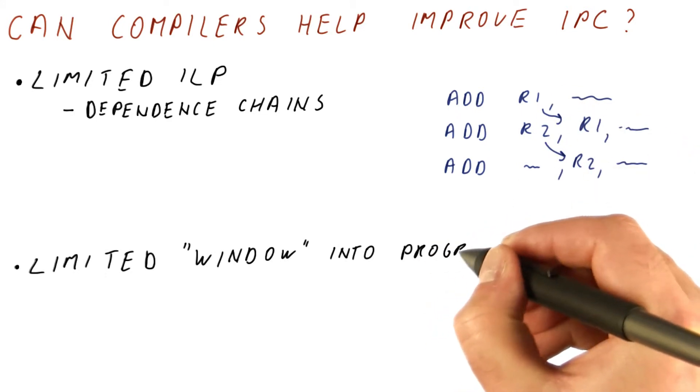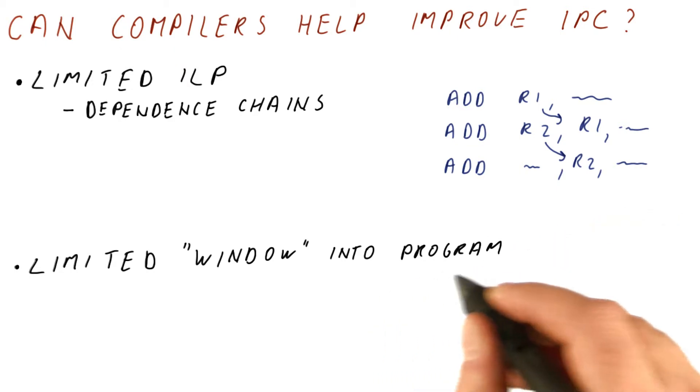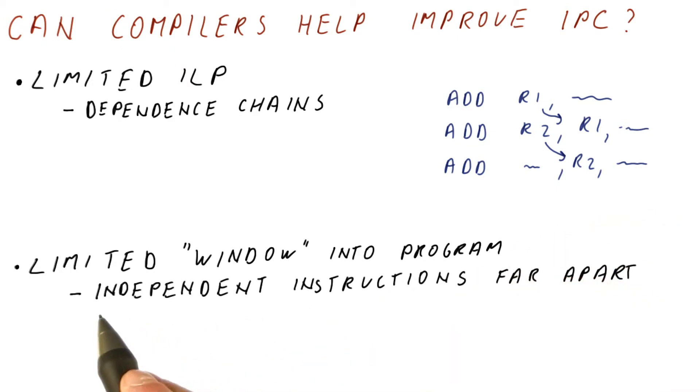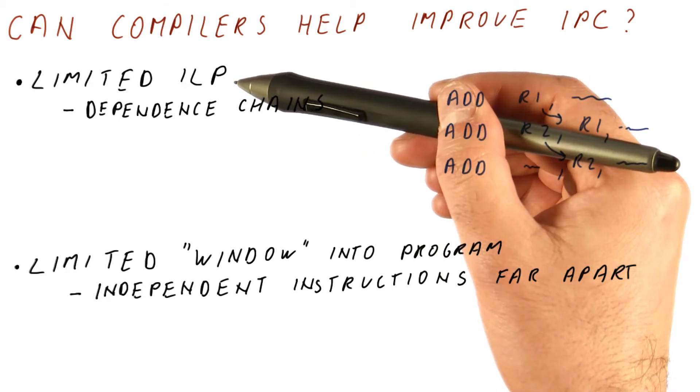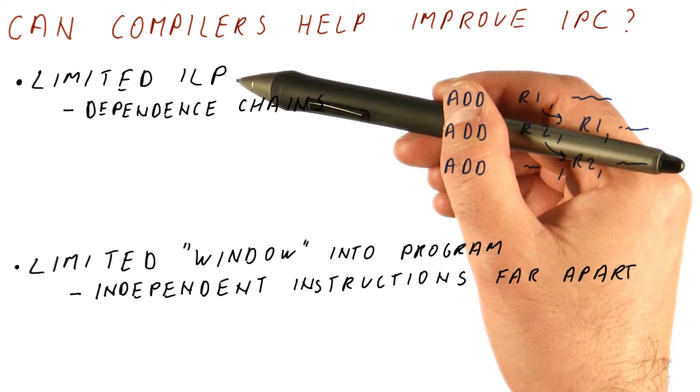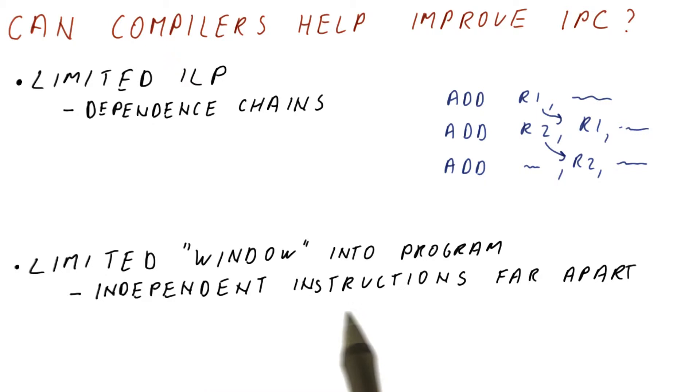And also, the hardware has a limited window into the program. For example, there might be independent instructions. So an ideal processor might be able to achieve good ILP on that program. But because these independent instructions are far apart, a real processor simply cannot see those instructions.